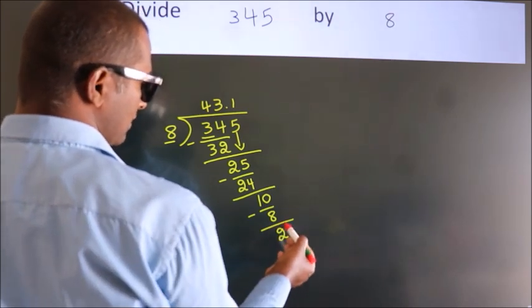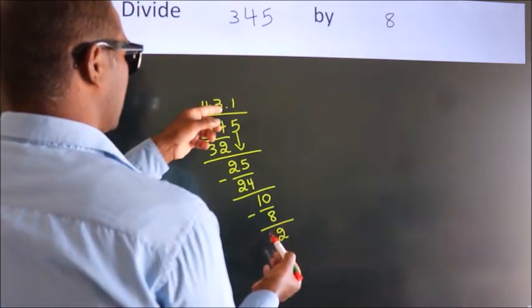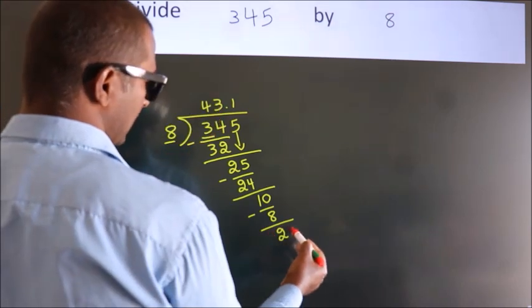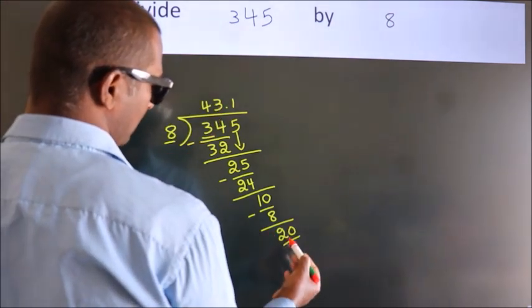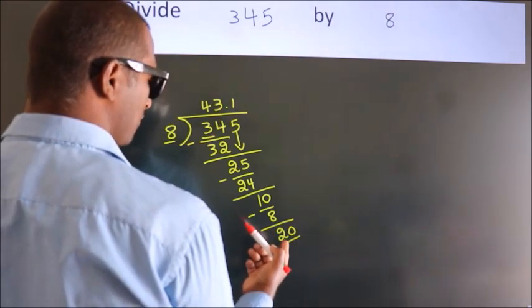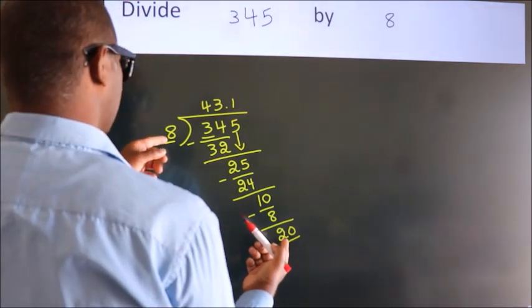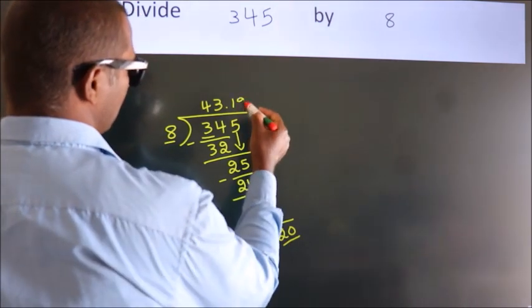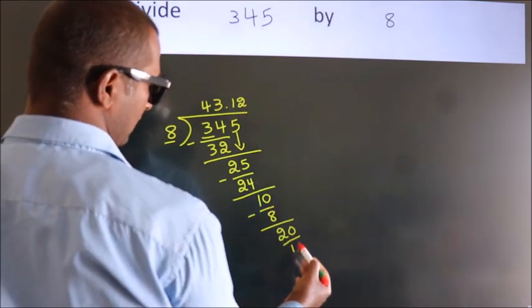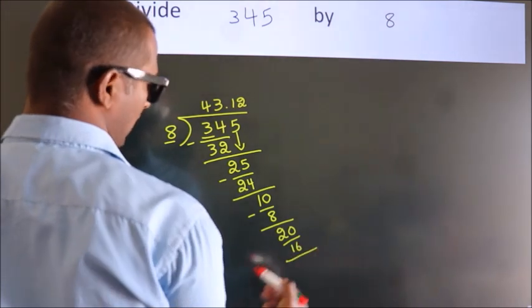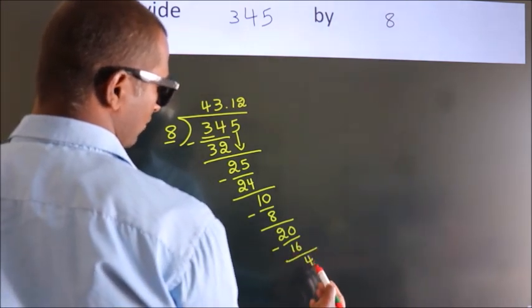After this, we already have the decimal. So directly take 0. So, 20. Now we subtract. We get 4.